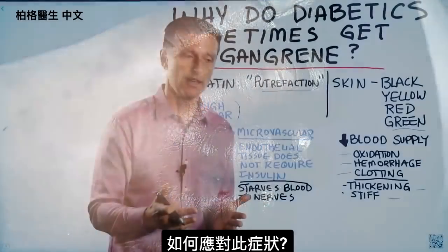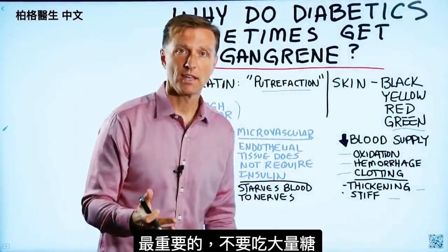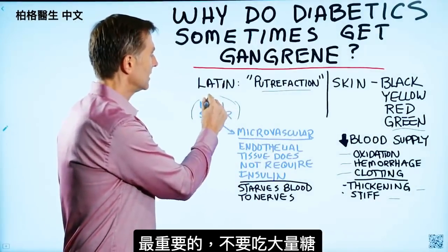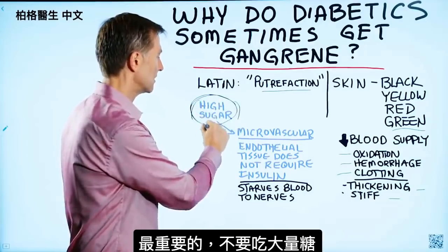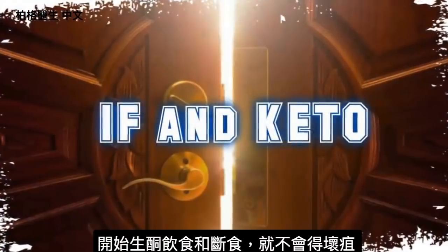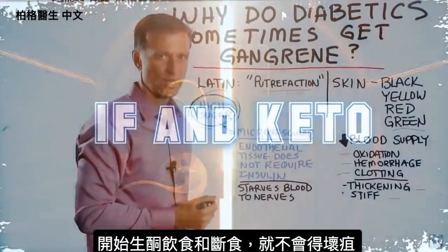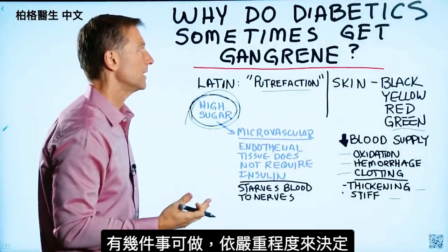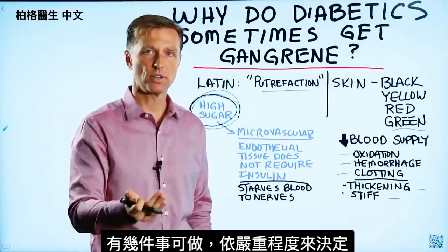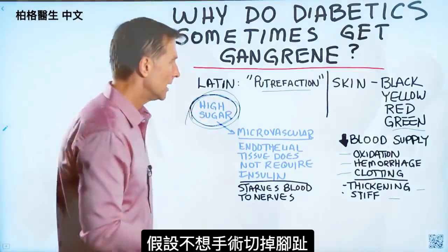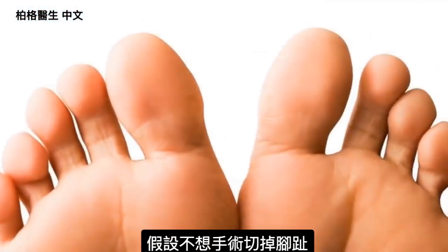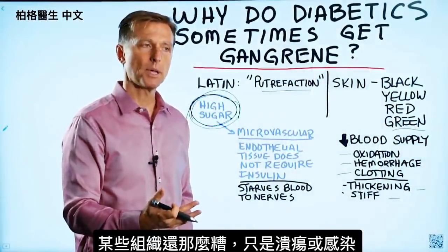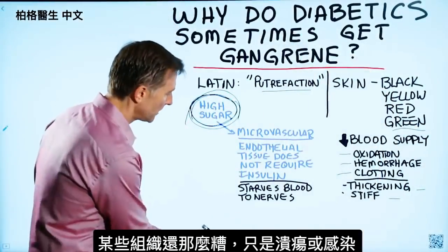What could be done for this condition? The most important thing is to avoid this in the first place by not consuming so much sugar — doing keto and intermittent fasting — so you never end up in this situation. But if you already have this situation, there might be a couple of things you can do depending on how severe it is. Let's say you don't want to get surgery and remove your toes, and maybe you have certain tissues that are not so bad — maybe you have an ulcer or some infection.